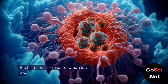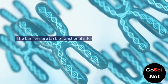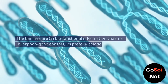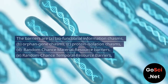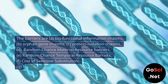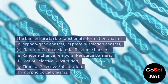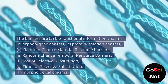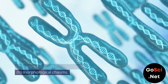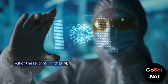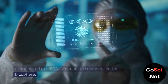Each limit is the result of a barrier, and each limit confirms the presence of a barrier. The barriers are: a. Bio-functional information chasms. b. Orphan gene chasms. c. Protein isolation chasms. d. Random chance material resource barriers. e. Random chance temporal resource barriers. f. Cost of selective substitution. g. Time for selective substitution. h. Morphological chasms. All of these confirm that micro-evolution cannot be extrapolated to mega-evolution to create the entire biosphere.